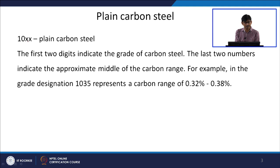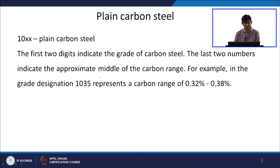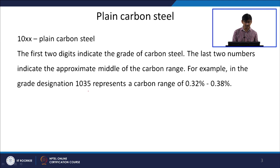For plain carbon steel the second digit is 0, and the last two digits tell us the composition. The first two digits indicate the grade of carbon steel, while the last two numbers indicate the approximate middle of the carbon range. For example, grade 1035 represents a carbon range of 0.30 to 0.38%, with an average of approximately 0.35% carbon.